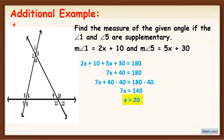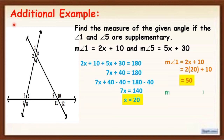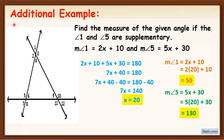Now, since x equals 20, we substitute it to the given measures. The measure of angle 1 is 2x + 10: 2 times 20 plus 10 equals 50. The measure of angle 5 is 5x + 30: 5 times 20 plus 30 equals 130. So angle 1 is equal to 50 and angle 5 is equal to 130.